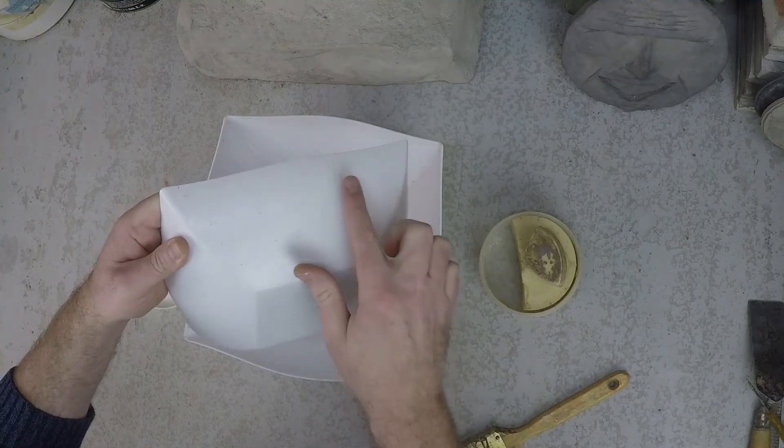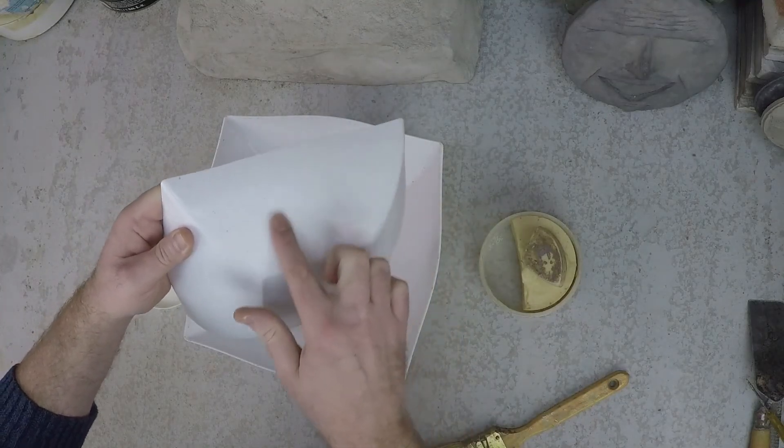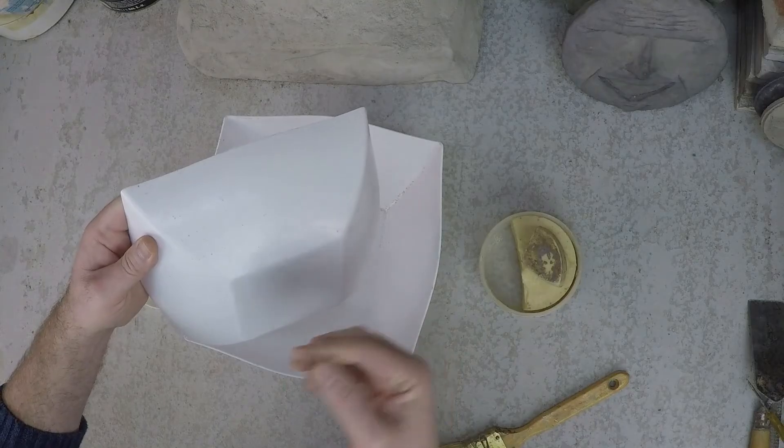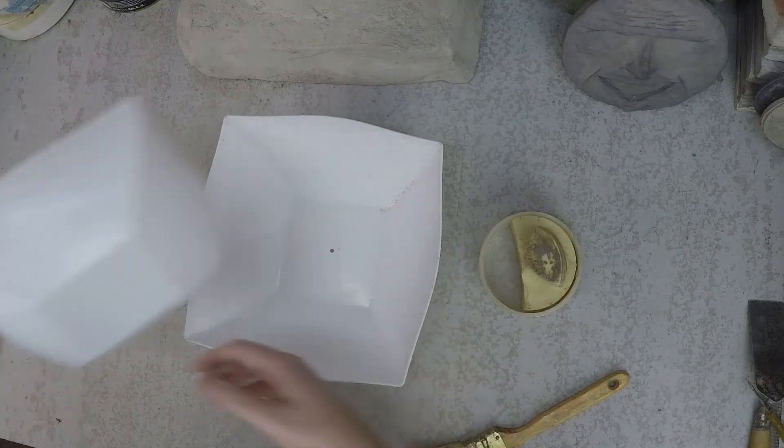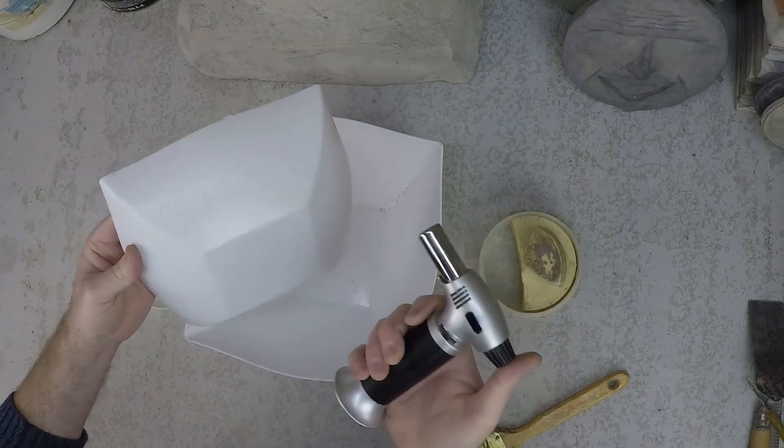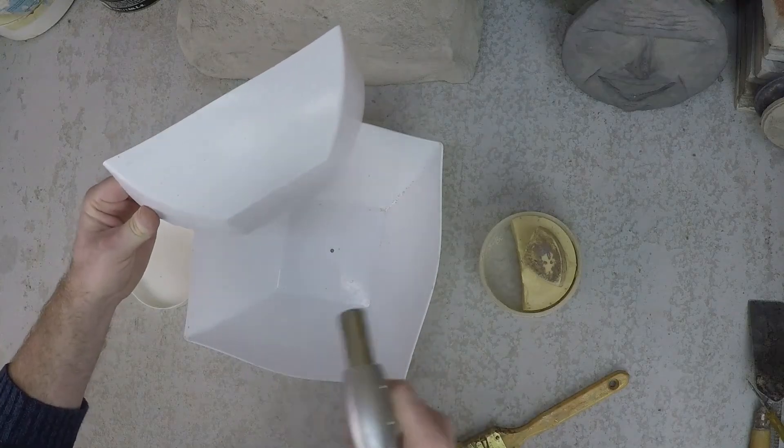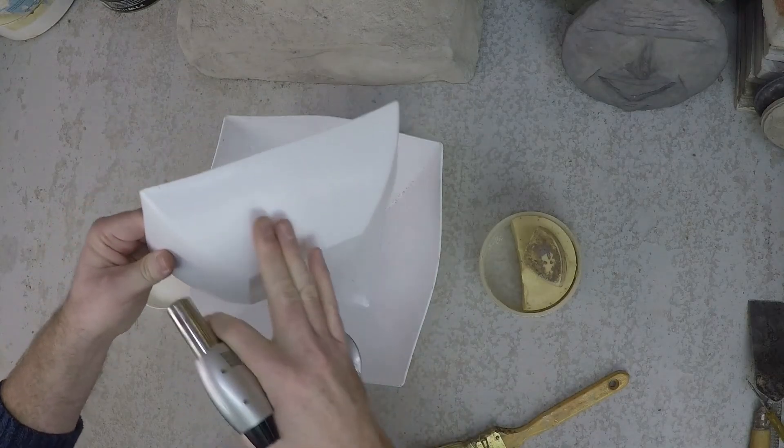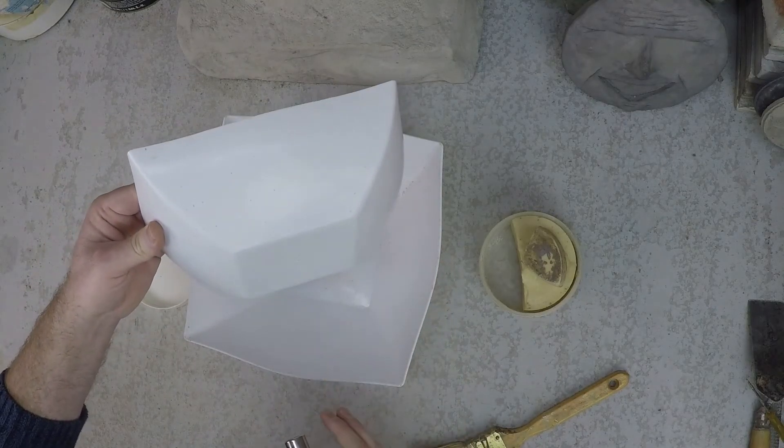Once you've applied the wax to the mold, you might notice there's very small ridges. You could see those in your finished product. So again, I take a little bit of heat and it helps get rid of any ridges that might be left from the wax.